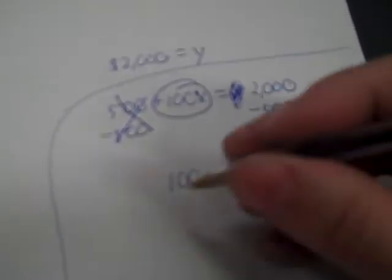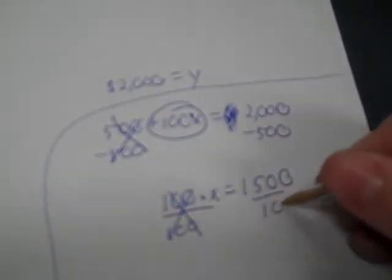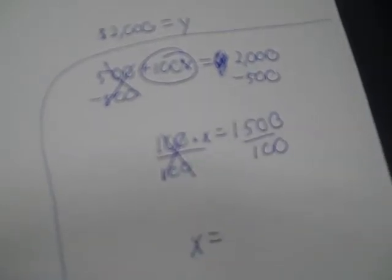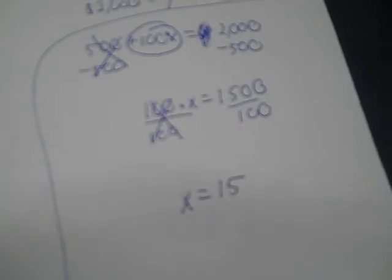Then I divide. 1,500 divided by 100 is 15. So the answer is 15. Number two.